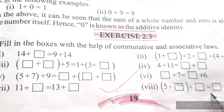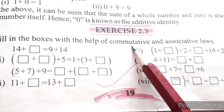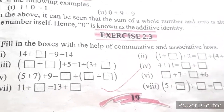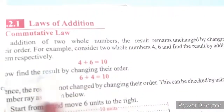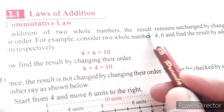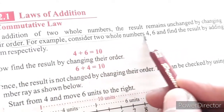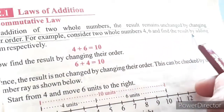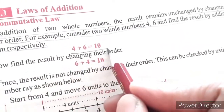This question we are going to do in the book. First, I will tell you what is the commutative law and what is the associative law. Commutative law: in the addition of two whole numbers, the result remains unchanged by changing their order. For example, consider two whole numbers 4 and 6 and find their result by adding them. 4 plus 6 is equal to 10.